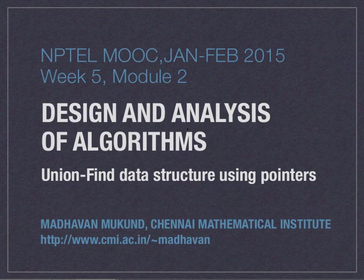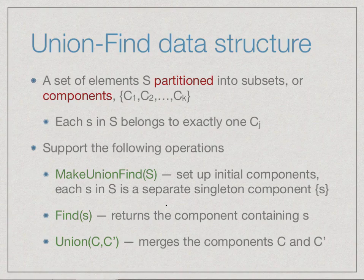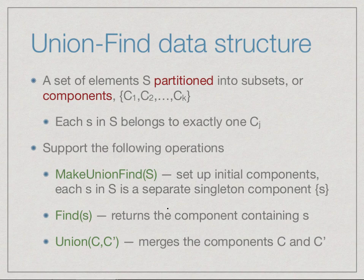Now we will see a more sophisticated implementation which has even better complexity. Recall that the union-find data structure keeps track of a partition of a set S and supports three operations: make-union-find, which creates a trivial partition where each element is in a singleton partition named by itself; find, which tells us which partition a given element belongs to; and union, which combines two partitions into a single one.